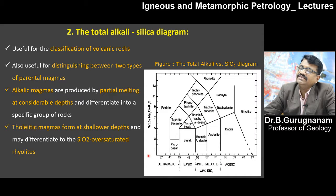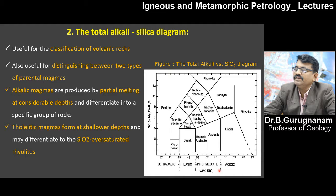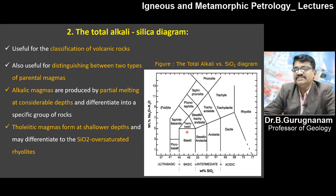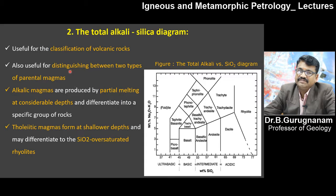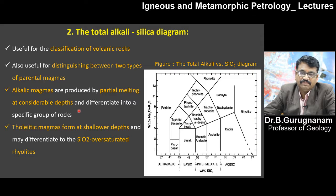The Total Alkali Silica (TAS) diagram has silica on the x-axis and weight percentage of sodium plus potassium on the y-axis. 45–52% SiO2 is basic, 52–63% is intermediate, above 63% is acidic, and less than 45% is ultrabasic. After getting your analytical report, you plot and determine the rock type and magma. This diagram is useful for classifying especially volcanic rocks and for distinguishing between two different magma types. Alkali magmas are produced by partial melting at considerable depth, while tholeiitic magmas form at shallower depth.